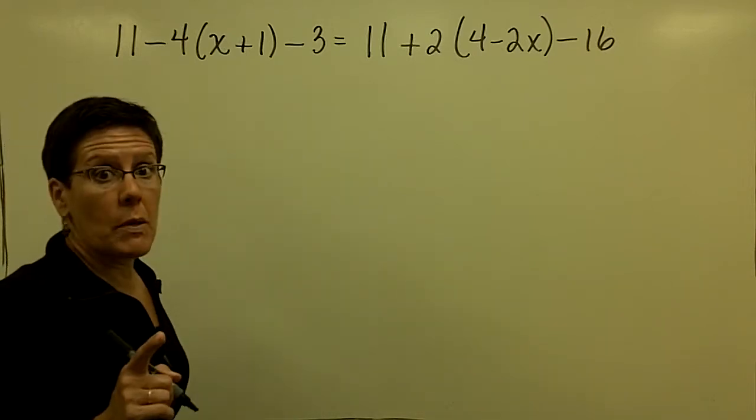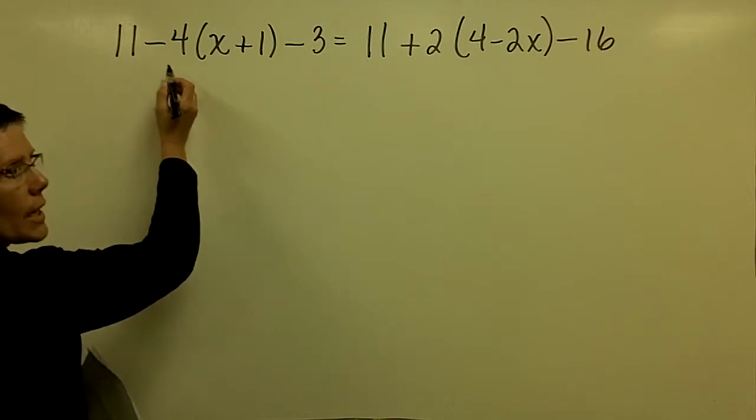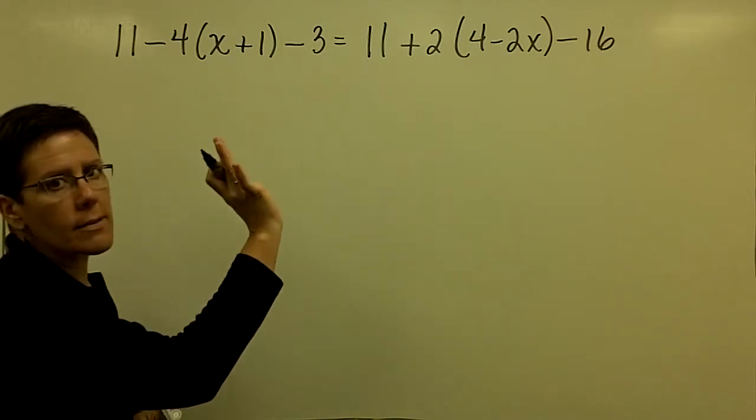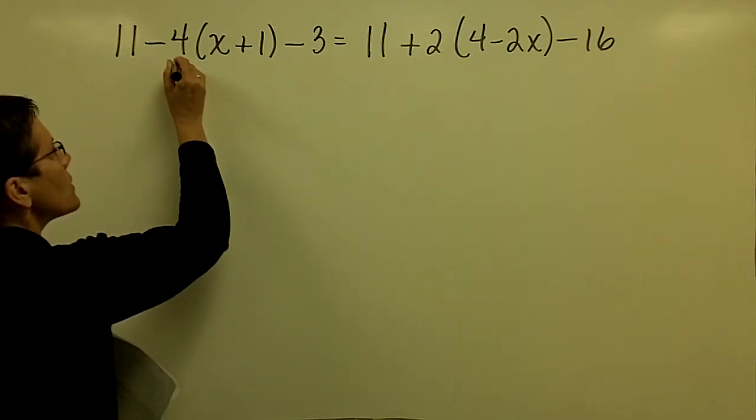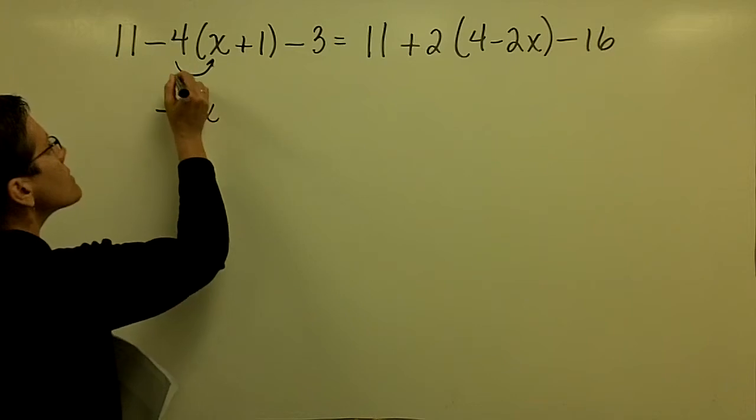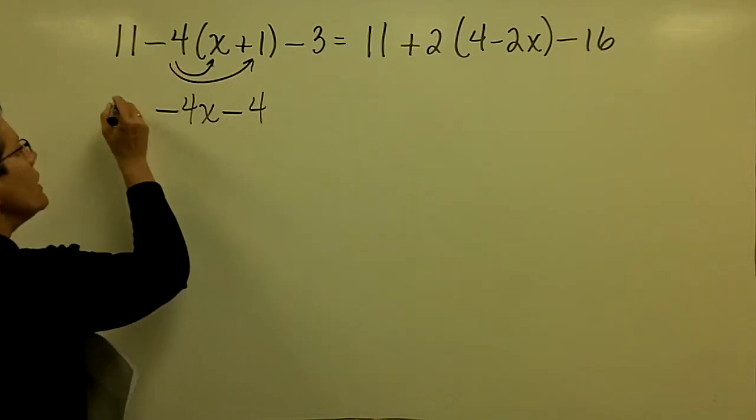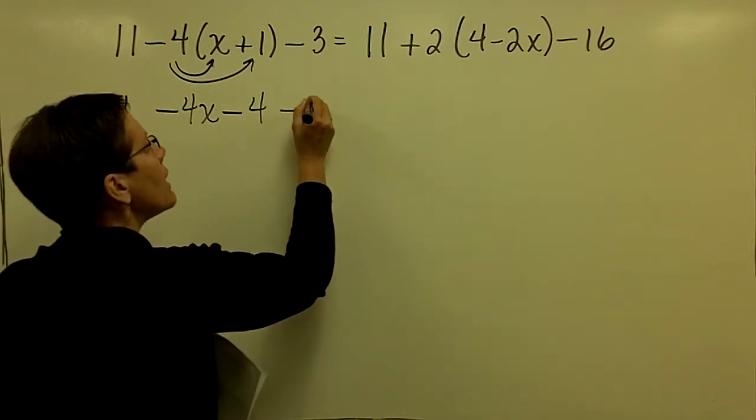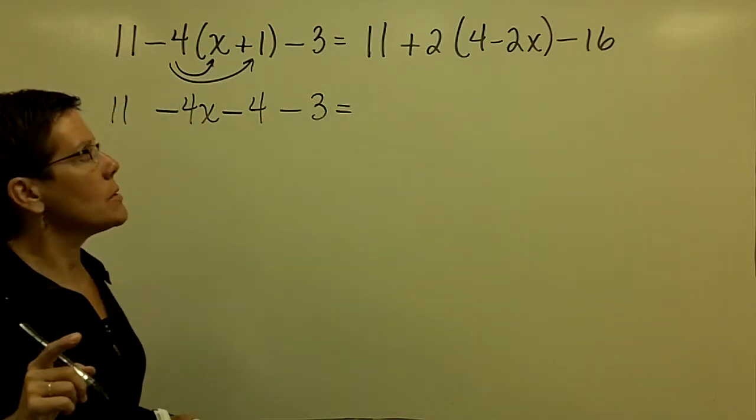We still follow the same principles that we've been using, so let's clear the parentheses. Please don't take 11 minus 4 and get 7. That's not what you're supposed to do. You never subtract first. Order of operations says to multiply the negative 4 times x and get a negative 4x, and a negative 4 times 1 is a negative 4. Just be careful with your multiplication. So there's the left-hand side, and we'll collect our like terms in a minute.